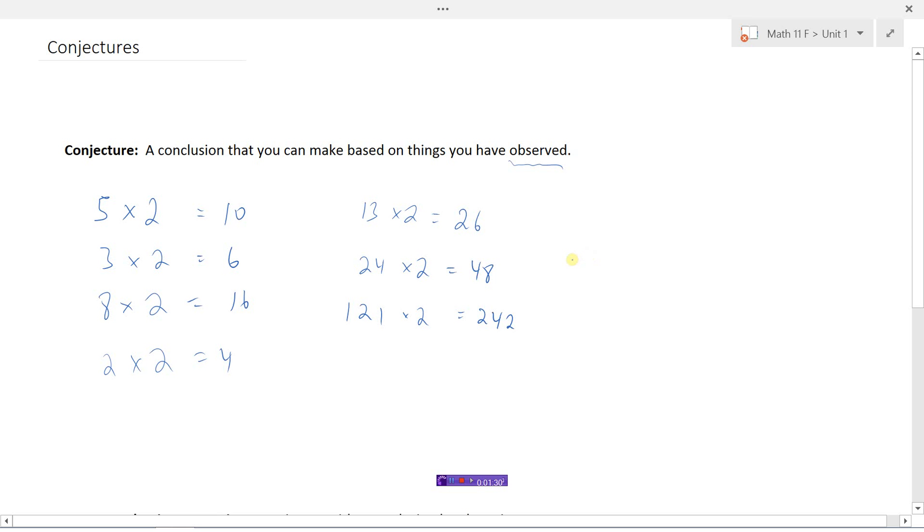So based on all of this information I am ready to make a conjecture. I'm ready to make a conclusion that I can make based on these things that I have observed. And this is what my conjecture would be. My conjecture is that any number multiplied by 2 is an even number.